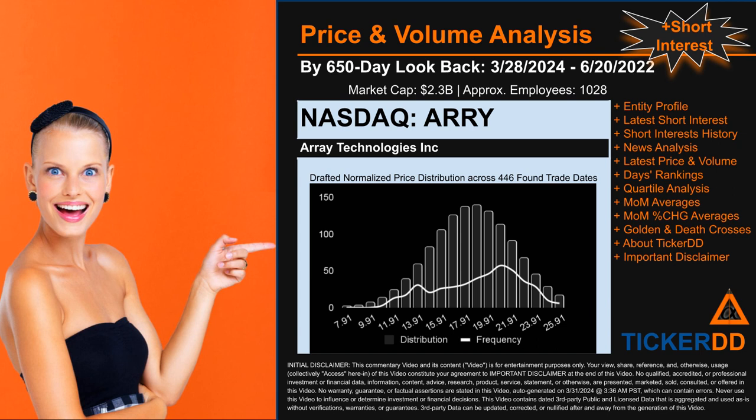The chart shown on this page is our initial attempt at studying the price for ARRY after dynamically normalizing price distribution across those 446 discovered trade dates. The bar chart is the generated distribution, and the overlaid line graph, if generated, is the frequency of the prices on the x-axis. We will enhance this look-through as our model progresses. Remember that this is just a drafted, in-progress observational model to best fit abstracted third-party data into various opinionated views.